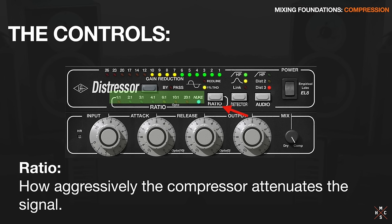Next, let's talk about the ratio control. The ratio is essentially how aggressively the compressor attenuates the signal. A 4 to 1 ratio means that for every 4 dB the signal exceeds the threshold, it's only going to allow it to exceed by 1 dB. For example, if you have a threshold of minus 10 dB and your ratio is 4 to 1, and your signal comes in at minus 6, that signal is exceeding the threshold by 4 dB. The compressor will say, you're over by 4 dB and I'm only allowed to have you be 1 dB over for every 4. So even though you came in at minus 6, it turns you down to minus 9 - turning that 4 dB of extra level into only 1 dB of extra level.